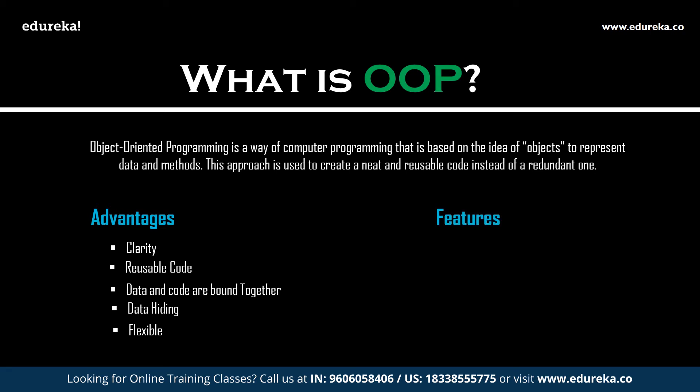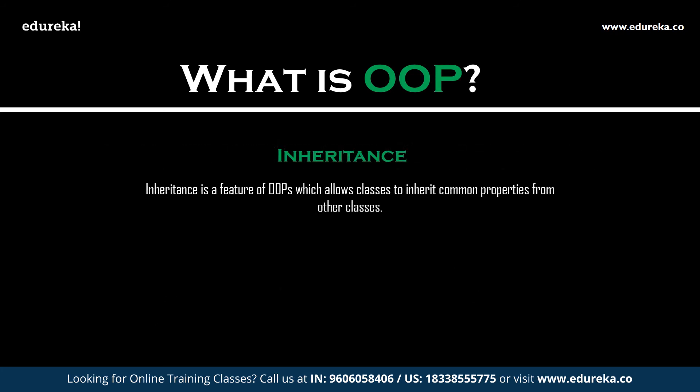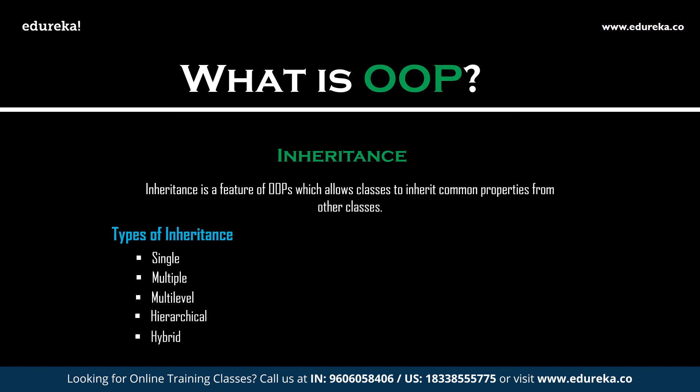The pillars of OOP are inheritance, encapsulation, polymorphism, and data abstraction. Inheritance is a feature of OOP which allows classes to inherit common properties from other classes. For example, if there is a class such as vehicle, other classes like car and bike can inherit common properties from the vehicle class. This property helps you get rid of redundant code, reducing the overall code size. There are different types of inheritance: single inheritance, multi-level inheritance, hierarchical inheritance, and hybrid inheritance. In single inheritance, a single child class inherits from a single parent class. Multiple inheritance occurs when a single child inherits from more than one parent class. In multi-level inheritance, a parent class is inherited by a child class, and that child class is again inherited by another subclass.